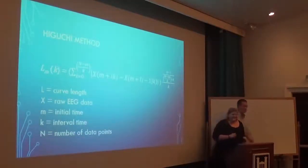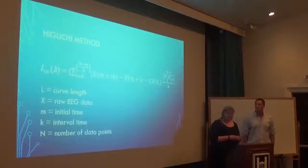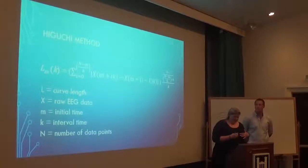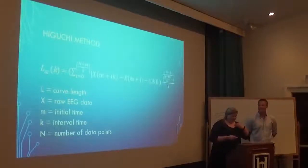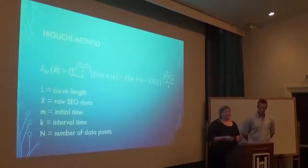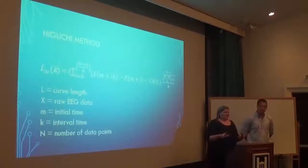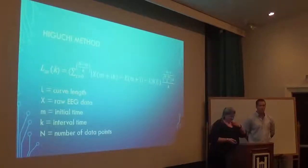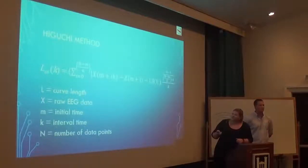Now we get into the mathematical theory side of things. We ran our data through the Higuchi equation, which is how we determined our maximum ruler length — our maximum K for measuring EEG brain wave signals. What physics does is take a mathematical theory like the Higuchi equation, run real data through it, and apply it to a real physical scenario. This equation calculates curve length L by taking X, the raw EEG data, as a function of initial time M and interval time.